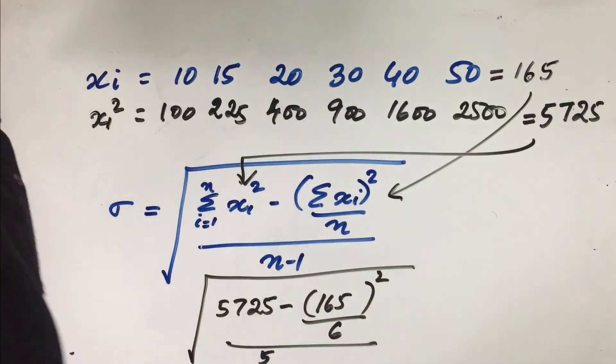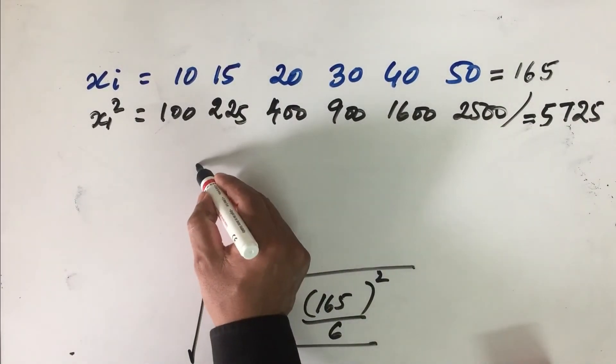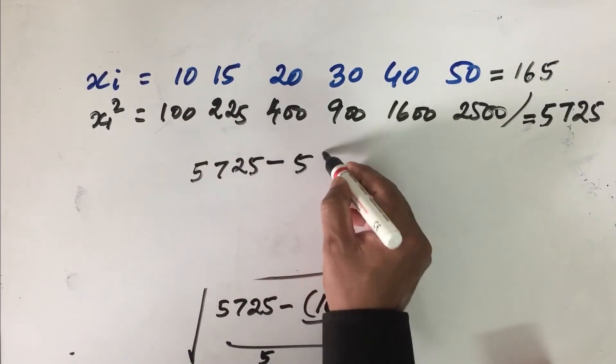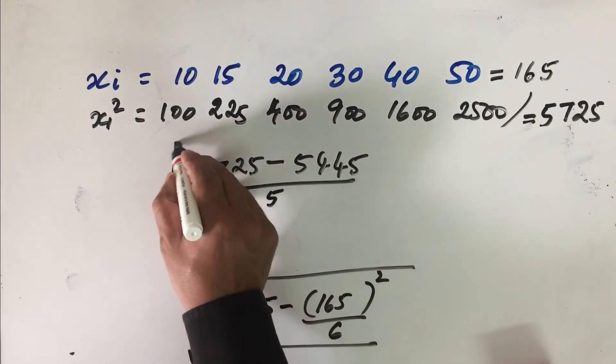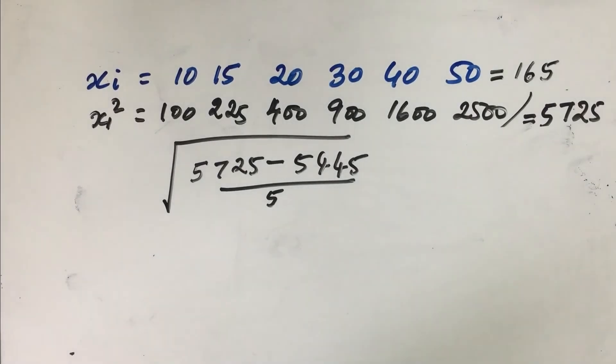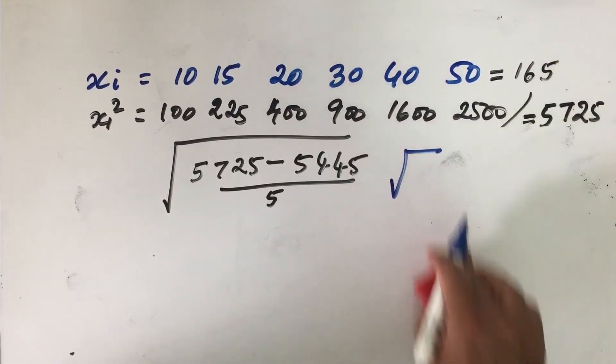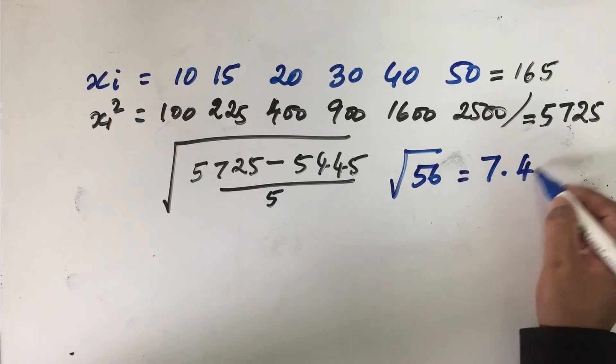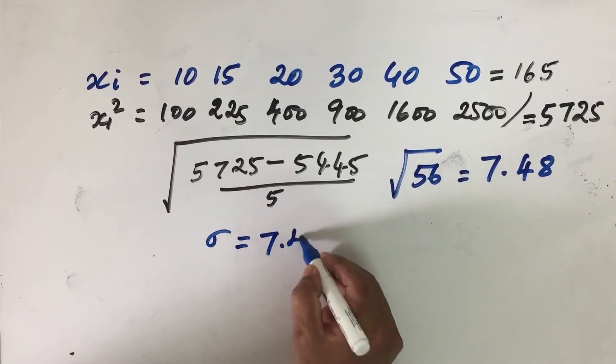So therefore what we are going to do is 5725 minus 5445 divided by n, which is 5, divided by n minus 1, which will be 5, find the root of that. So therefore this is equal to 5725 minus 5445 divided by 5. Therefore this is equal to root of 56. You know that root of 56 is equal to 7.48.